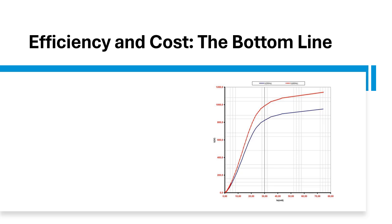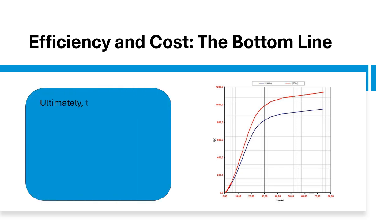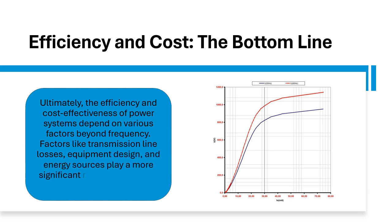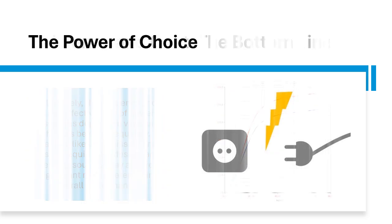Efficiency and cost — the bottom line. Ultimately, the efficiency and cost-effectiveness of power systems depend on various factors beyond frequency. Factors like transmission line losses, equipment design, and energy sources play a more significant role in determining overall performance.